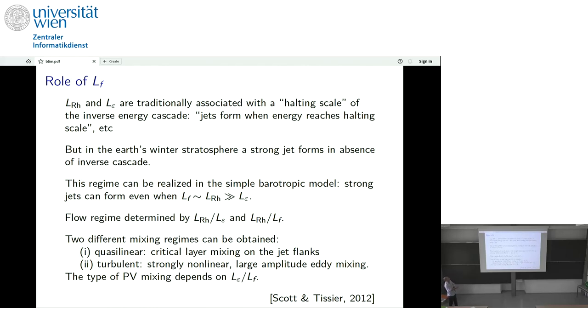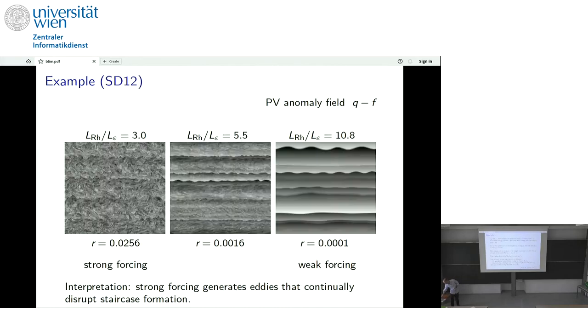And the role of the forcing, just again, quickly, this is sort of an aside. The forcing scale, in that spectrum that I showed you, it's often considered to be small scale. But there's nothing in this staircase construction that says your forcing has to be small scale. You don't need an inverse cascade to generate strong jets. And the example I had up right at the beginning, the Antarctic polar vortex, is kind of an example of that.